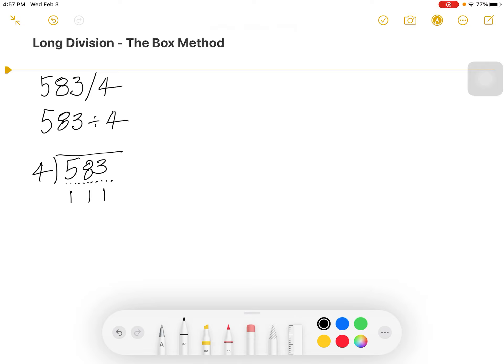We set up the box for the box method by making a box, and this box should have three smaller boxes inside. We have one for the hundreds, one for the tens, and one for the ones place.